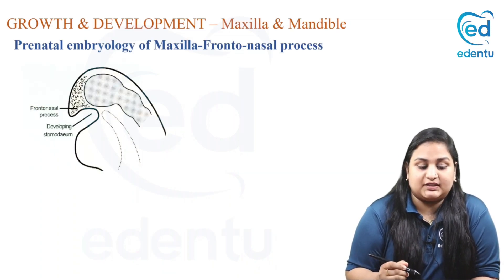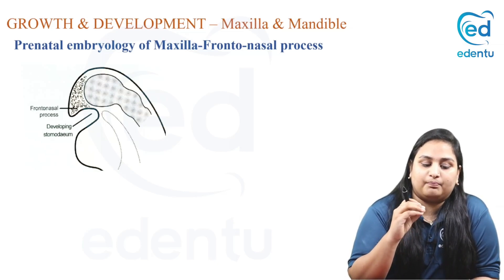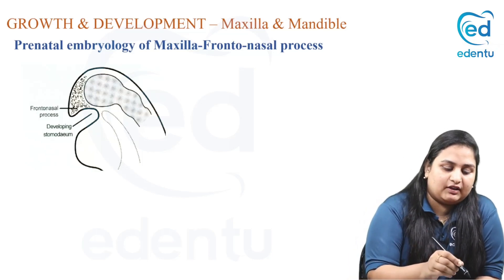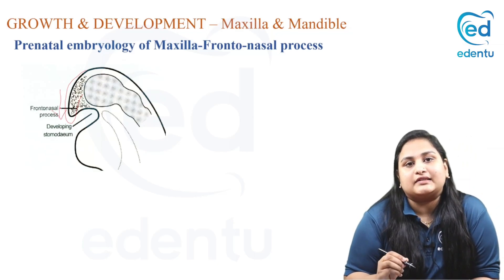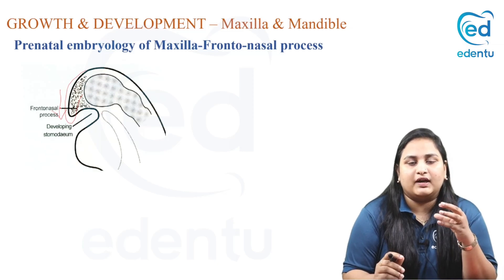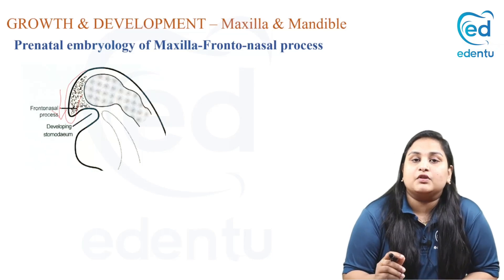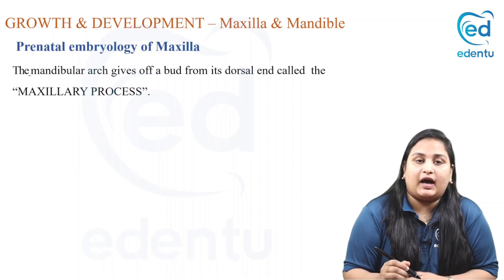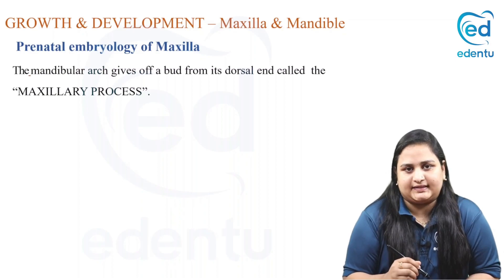Continuing with the prenatal embryology, prominent areas include the frontonasal process. Looking at the diagram, there is a prominent bulge in the downward direction called the frontonasal process — the initial bulge shifts downward to form it. Moving on, the mandibular arch gives off a bud on its ventral aspect called the maxillary process.